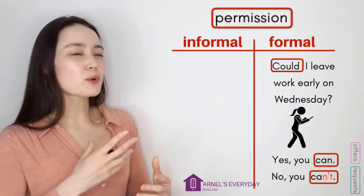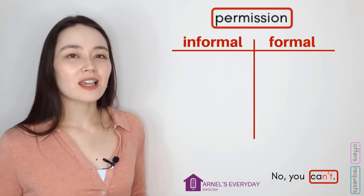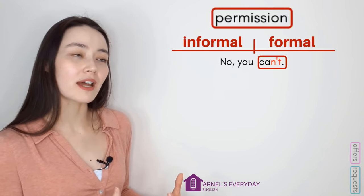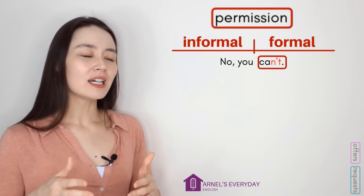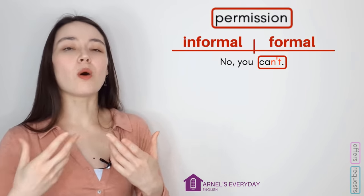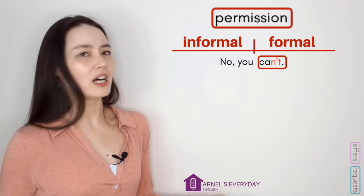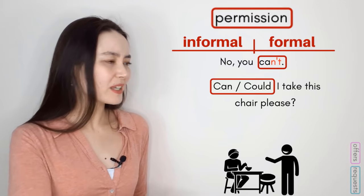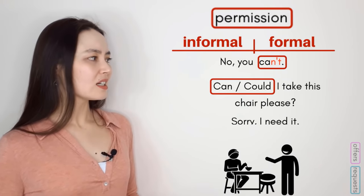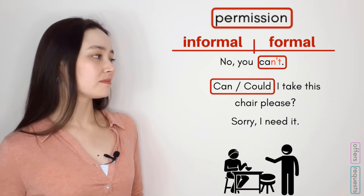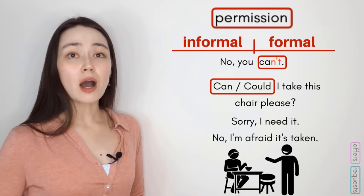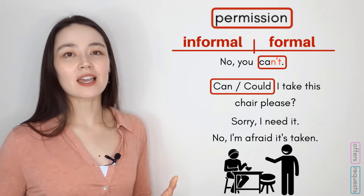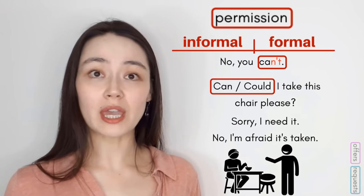Normally when we refuse permission, we don't just say 'No, you can't' — it's grammatically correct but very direct. We would usually explain why something isn't allowed. 'Excuse me, can I take this chair?' 'Sorry, I need it.' Or: 'I'm afraid it's taken.' We'd be a little softer — we wouldn't just say 'No, you can't.'